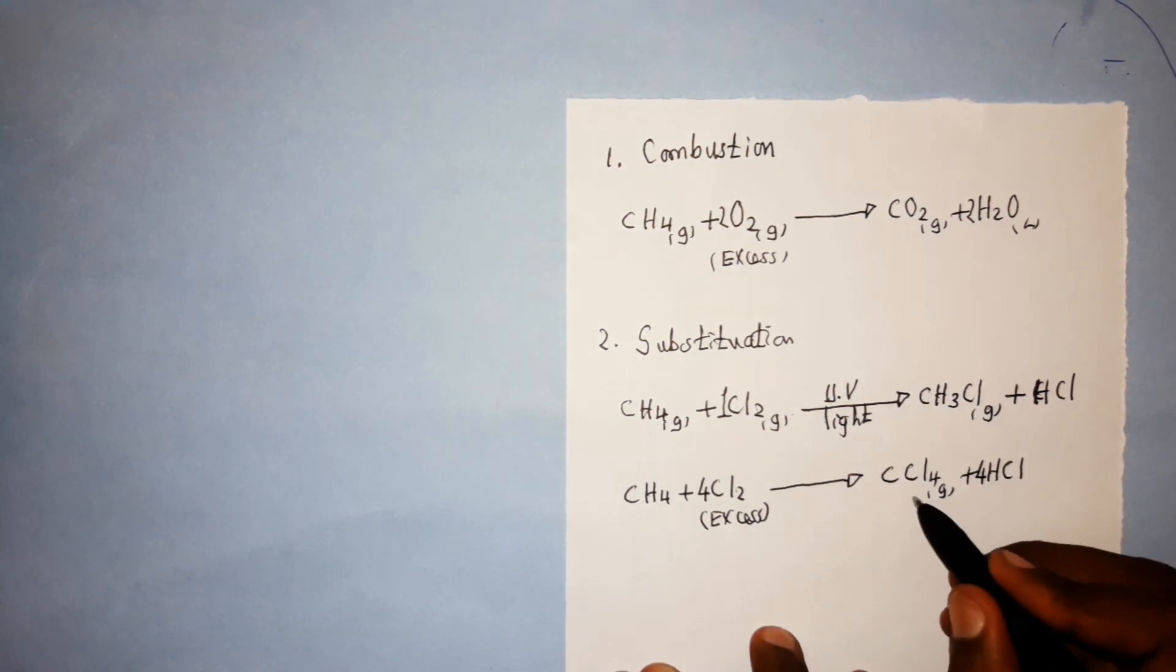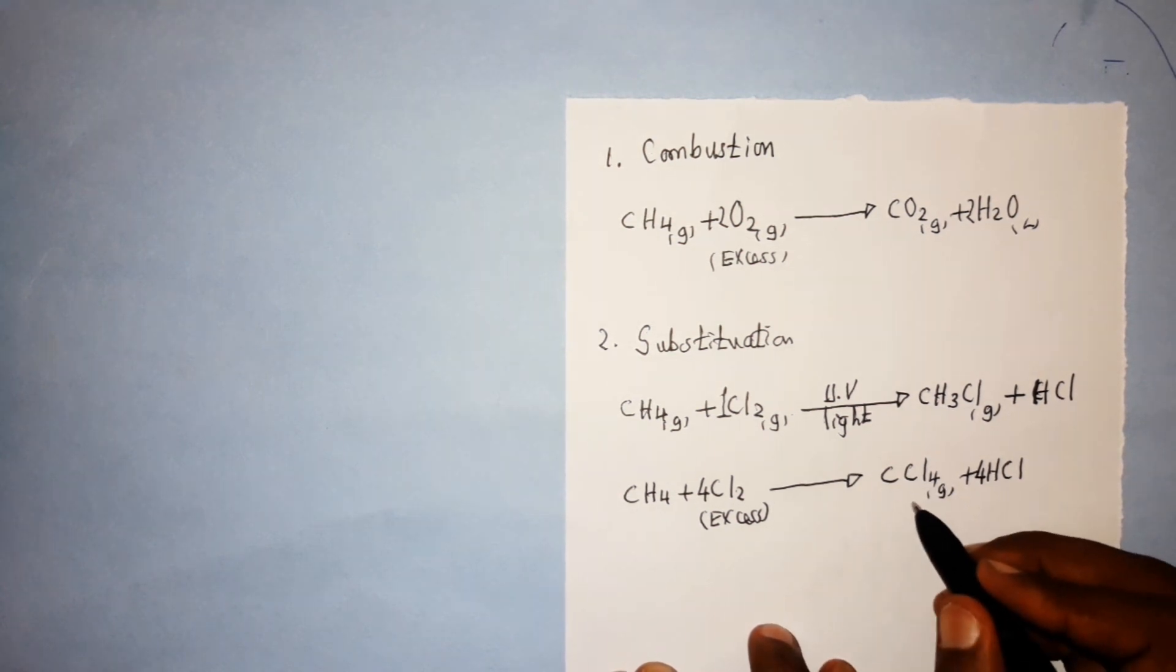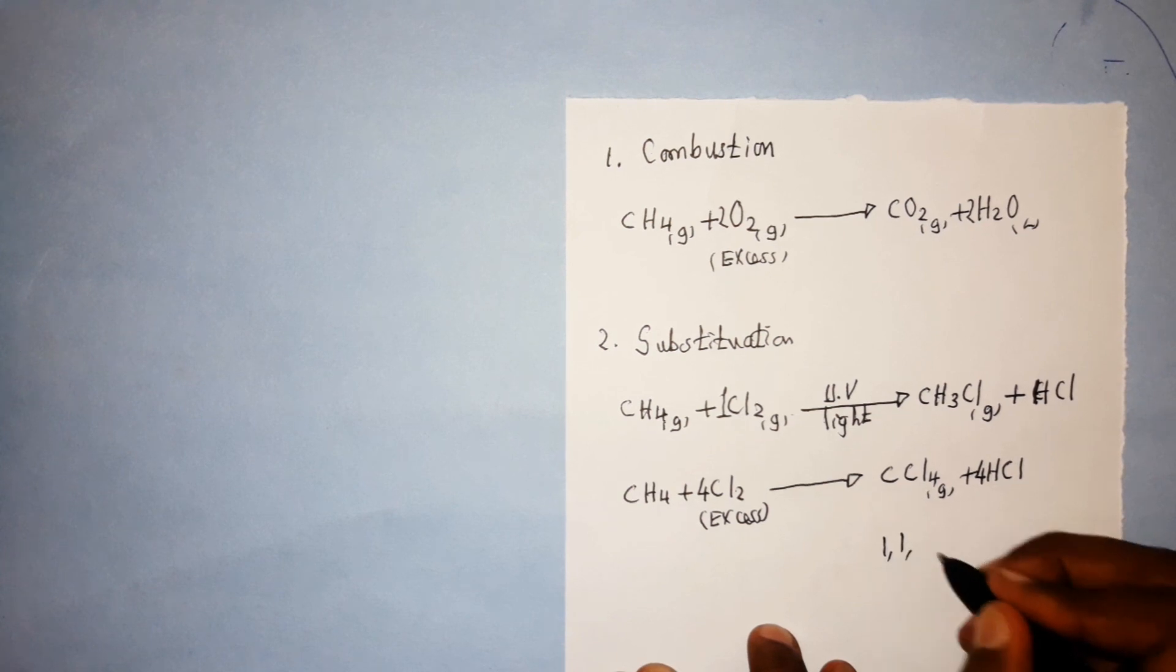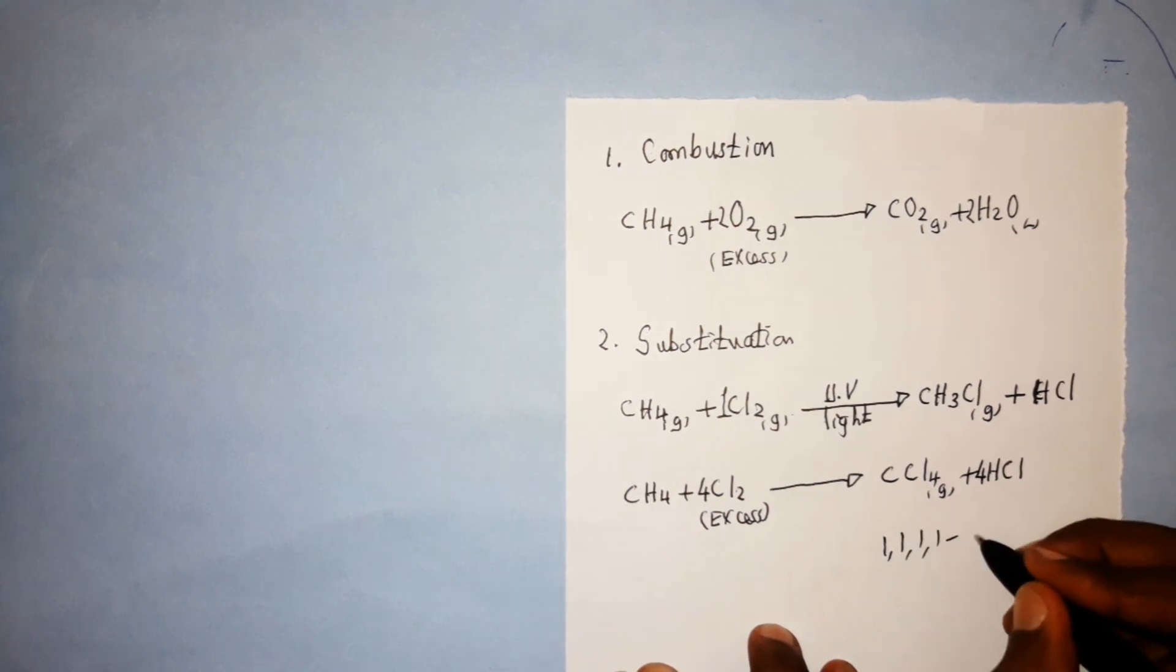Here you will get haloalkane, which is chloromethane. But to name it systematically, it will be tetrachloromethane.